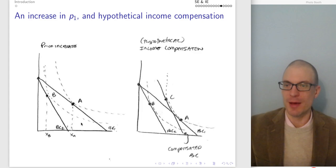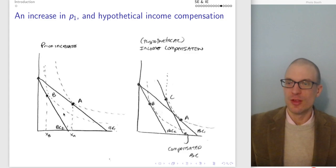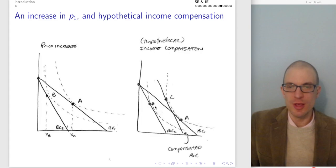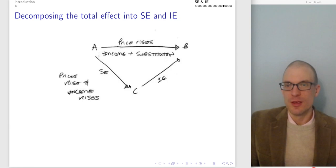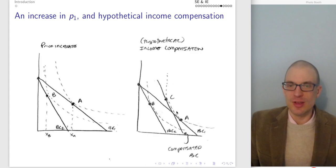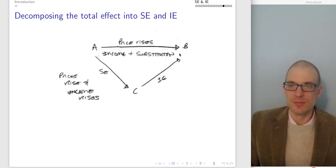Here's an increase in the price of good one with the hypothetical income compensation. We increase the price of good one — budget constraint becomes steeper. We were originally consuming bundle A, now we consume bundle B. Suppose we hypothetically compensate them with income — call that bundle C. This is the sequence of slides that are super important. Going from bundle A to bundle B to bundle C: the price rises; the substitution effect gets us from A to C, and the income effect gets us from C to B.